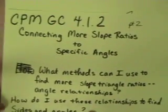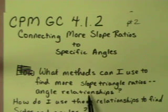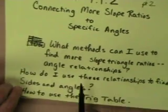So let's go back to our questions. Okay, what methods can I use to find more slope triangle ratios and angle relationships? Well we can use complementary angles and rotating the triangles to find some new ones, which is what we did today.